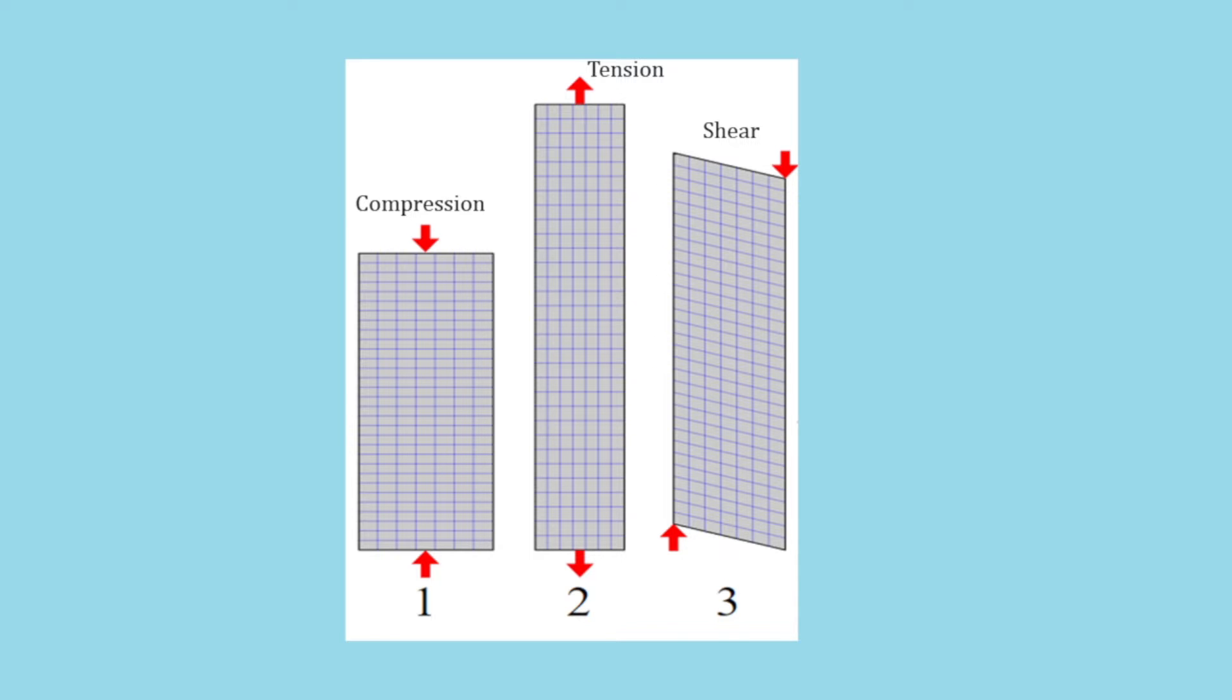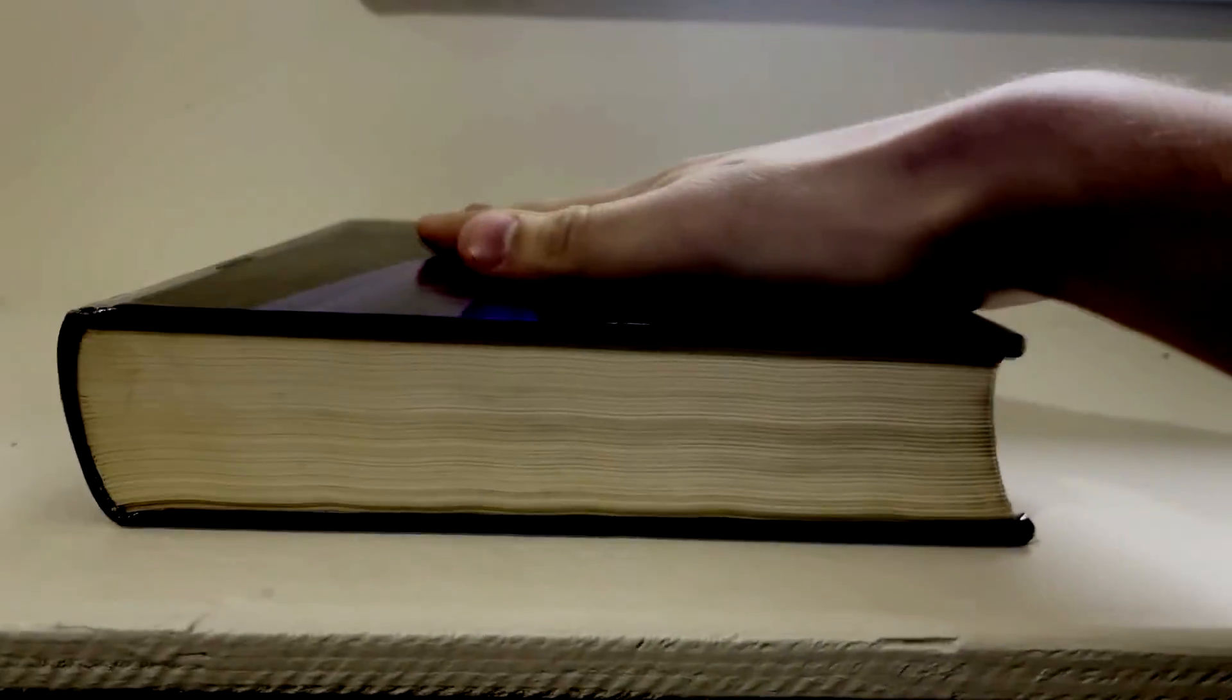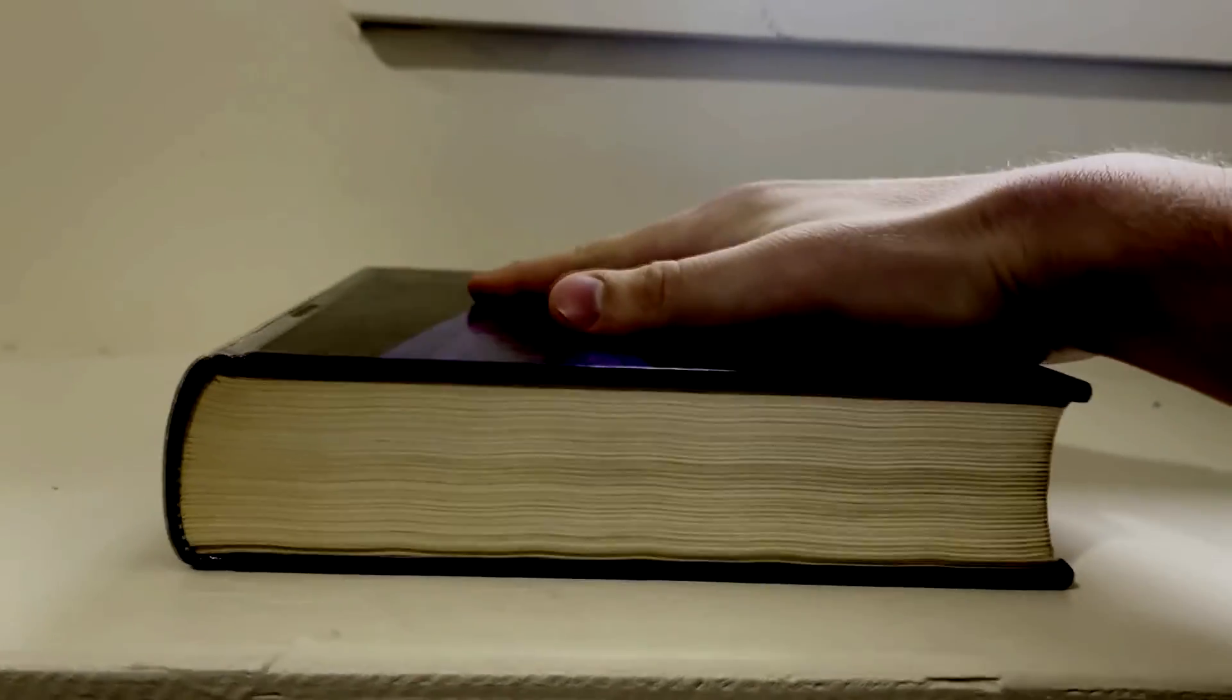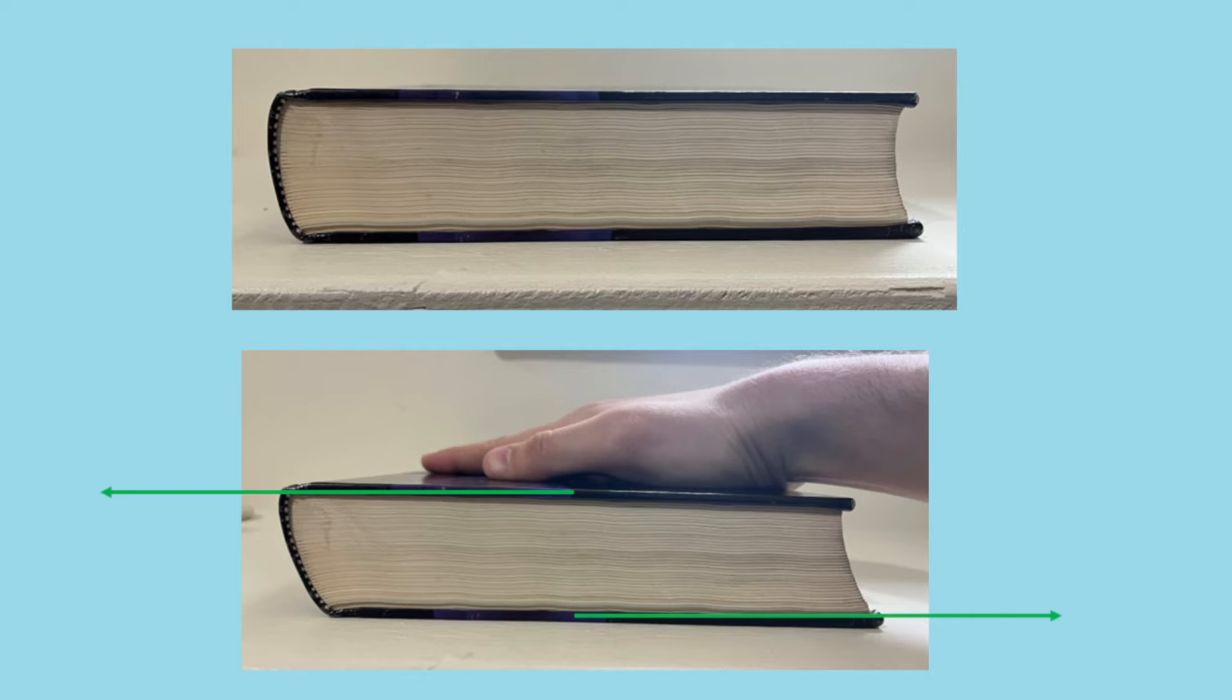A good visual example of shearing is this book. The top image shows the book as it appears normally. In the bottom image, I'm applying a horizontal frictional force to the left against the top cover, while the friction from the table acts on the bottom cover in the opposite direction to the right, leading to the diagonal sides you see here, making kind of a parallelogram shape.